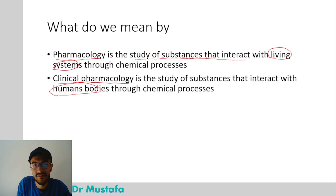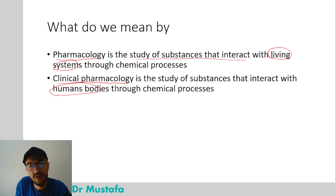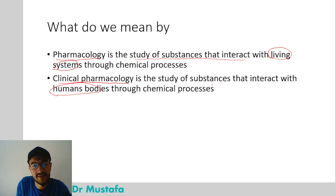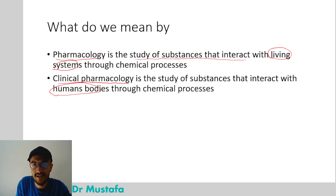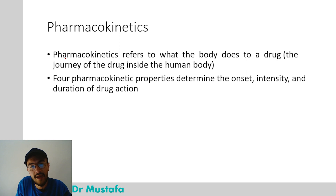So pharmacology refers to substances that interact with living systems, while clinical pharmacology is the study of substances that interact with the human body specifically. Clinical pharmacology is what we study in medicine. Now for pharmacokinetics: